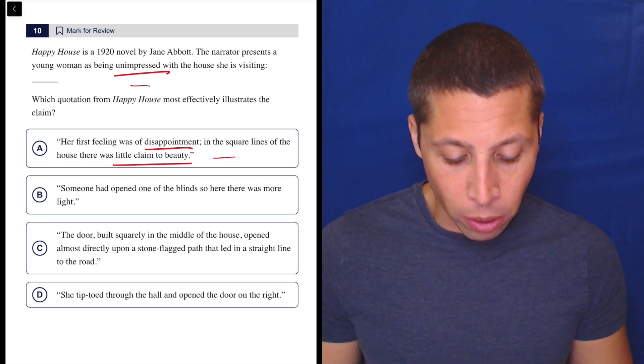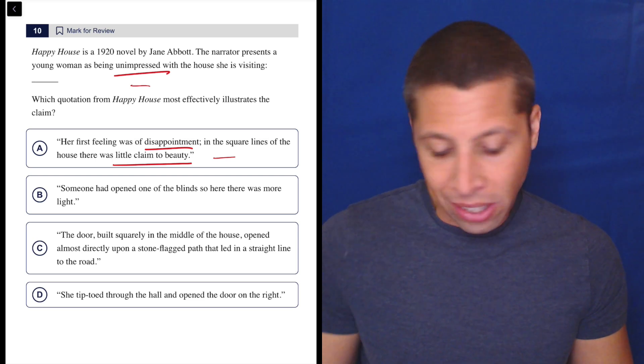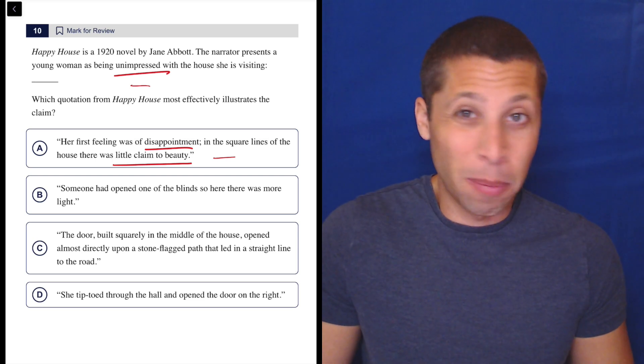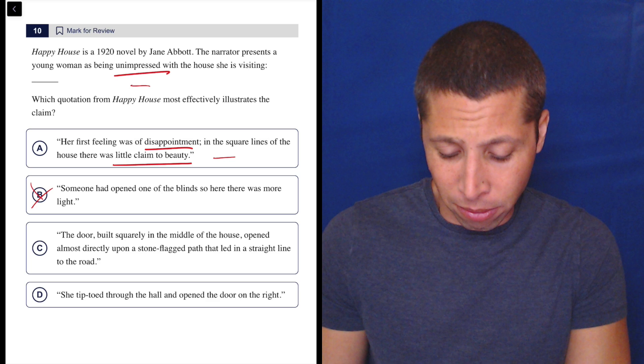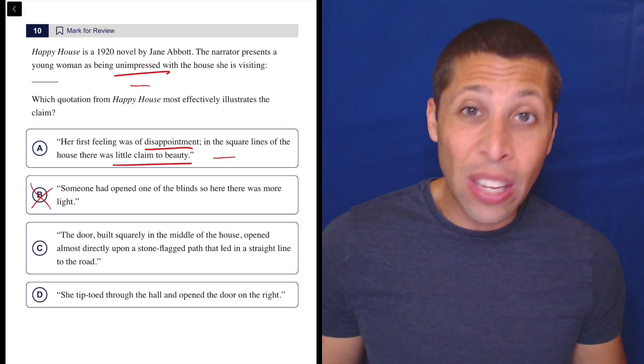Option B: Someone had opened one of the blinds, so here was more light. Was that good? I don't know. It just seems like a random statement, so I don't think it has anything to do with being unimpressed. There's light or not. I don't know what she feels about that.